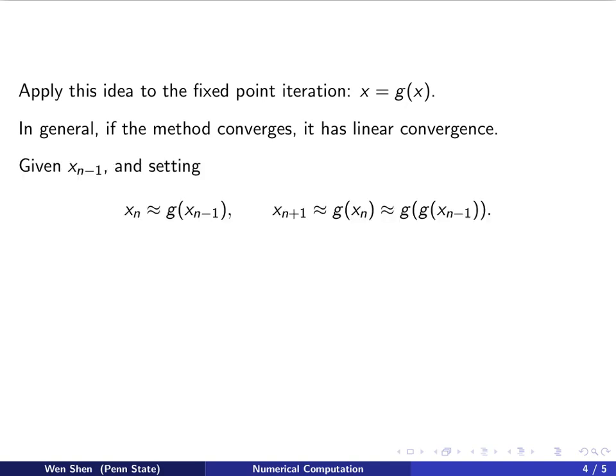So given an Xn minus 1, we set Xn to be one step of fixed point iteration applying onto it. And then Xn plus 1 will be, again, the fixed point iteration on Xn. This is exactly fixed point iteration twice onto Xn minus 1.